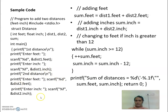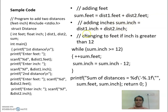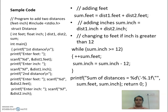To sum the two distances, sum.feet = distance1.feet + distance2.feet, and similarly for inches. If a conversion from inches to feet is needed — when inches are greater than or equal to 12 — we convert accordingly. This example demonstrates using the dot operator to access structure members.